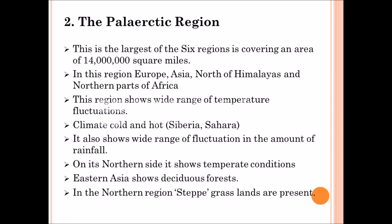The next region is the Palearctic region. This is the very largest region among the six zoogeographical realms. It covers 1 crore 40 lakh square miles and includes Europe, Asia, north of the Himalayas, and the northern part of Africa. In this region, great temperature fluctuations occur — from very cold to very hot. For example, Siberia is a very cold place in the Palearctic region, while the Sahara is a very hot place.